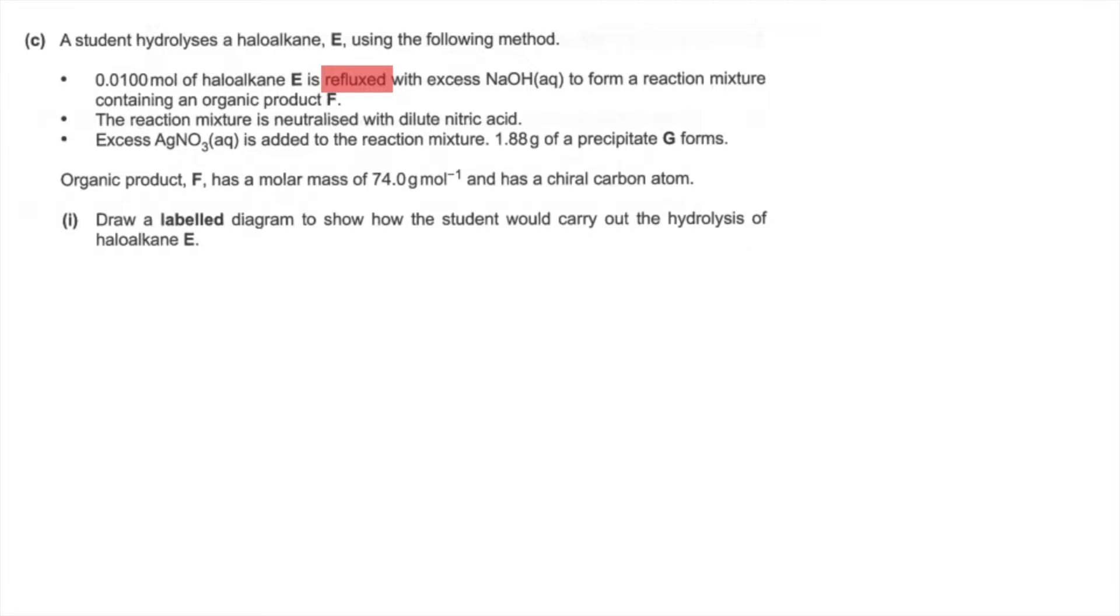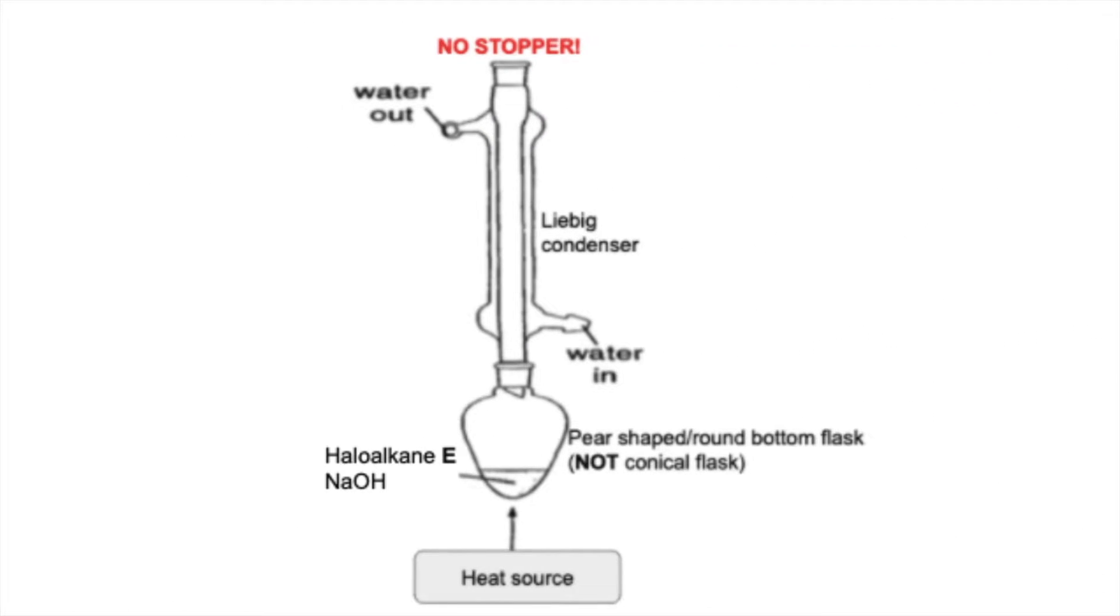So I've just got one from Google Images. Obviously, yours doesn't have to be as good as this. But as long as you get some of the key elements to it, you'll be fine. So what sort of things are we looking for? So we need a suitable container to heat the mixture up in. So haloalkane E and sodium hydroxide will be in either a pear-shaped or a round-bottom flask. You certainly can't use a conical flask for that.